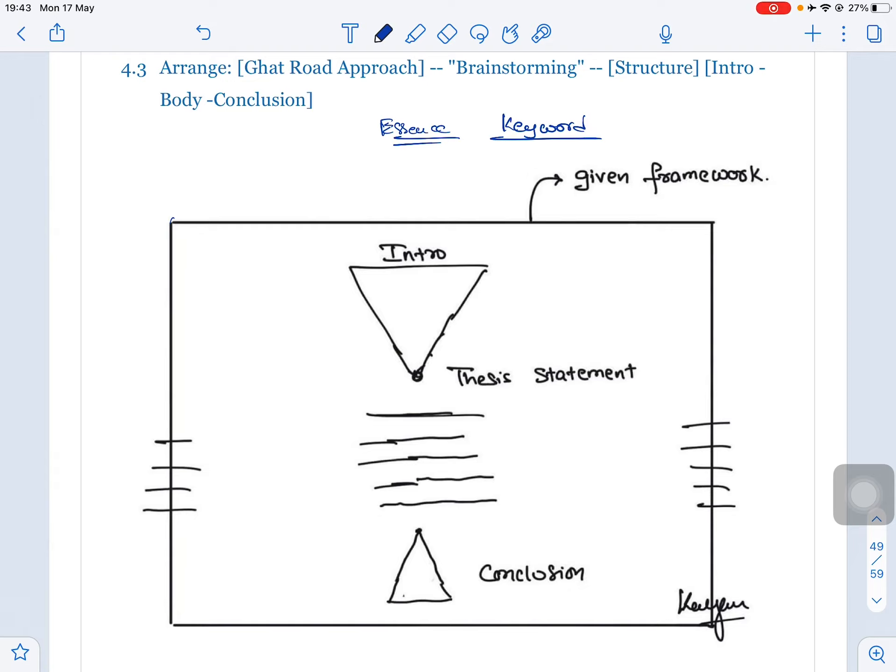In my understanding, the pictorial representation shows that this black line is actually the boundary of your framework. That is the essence. As long as you stay within the essence, your essay is decently rewarded. The minimum you get is 125, anything above that is bonus. That depends on your hard work.